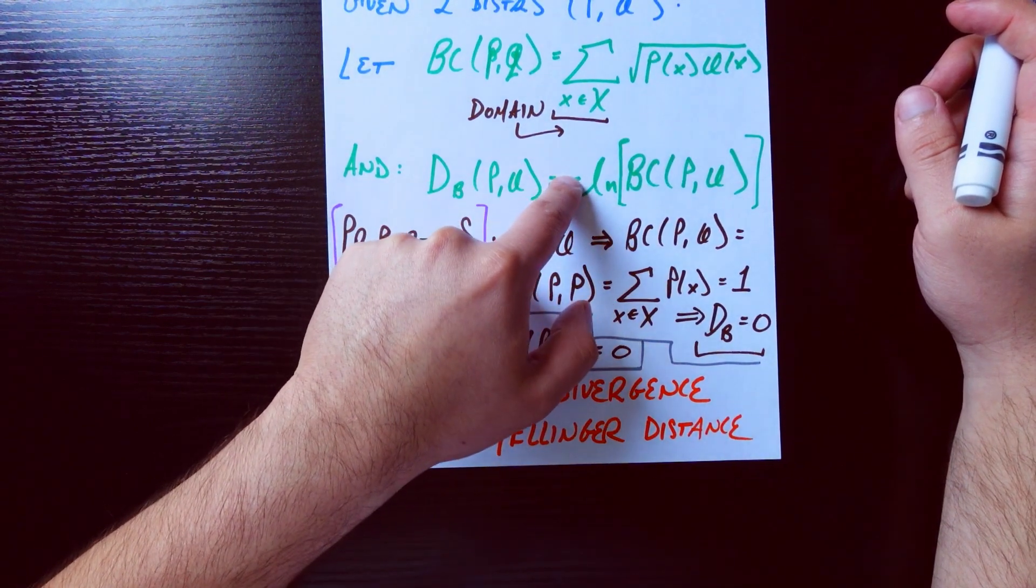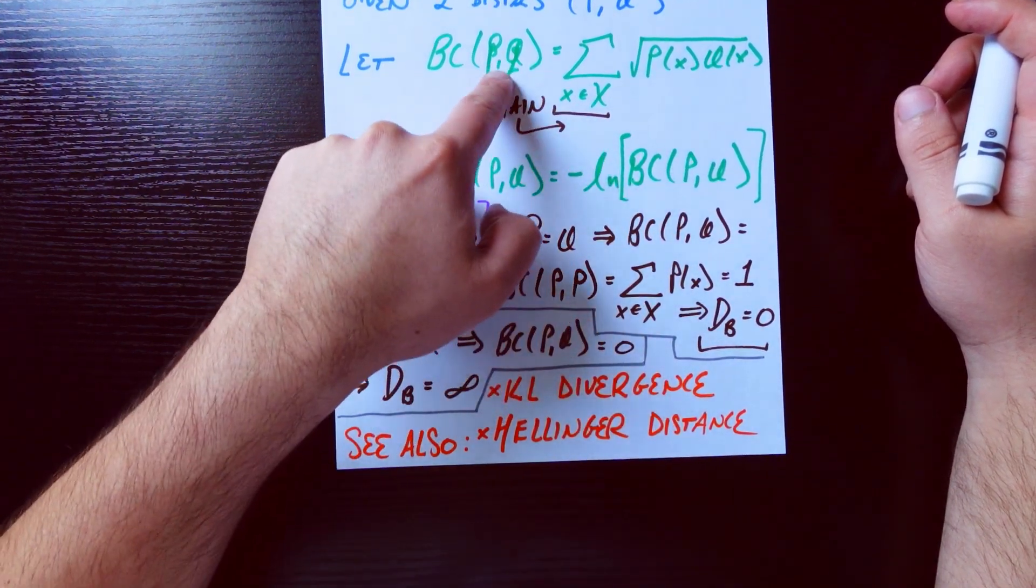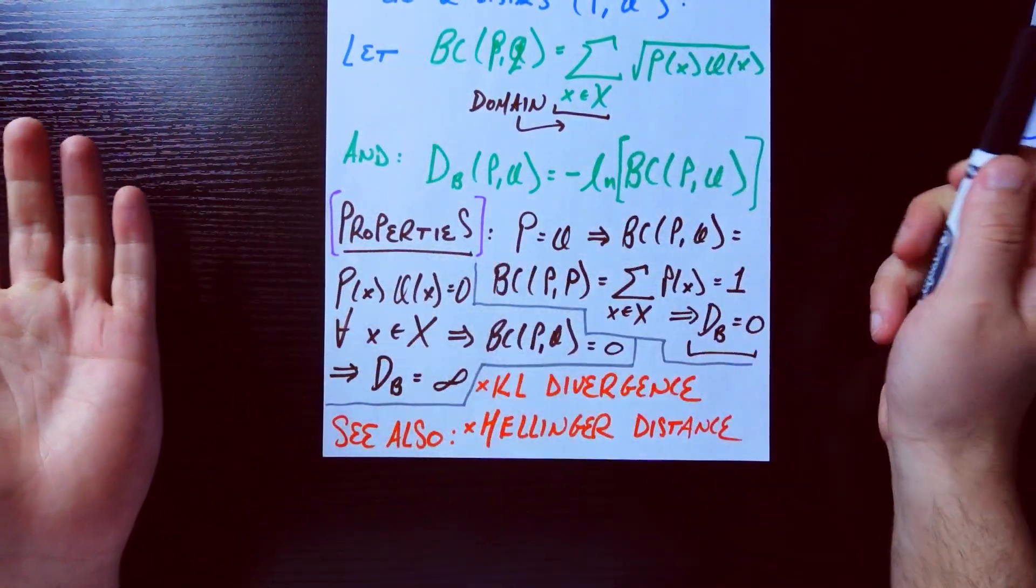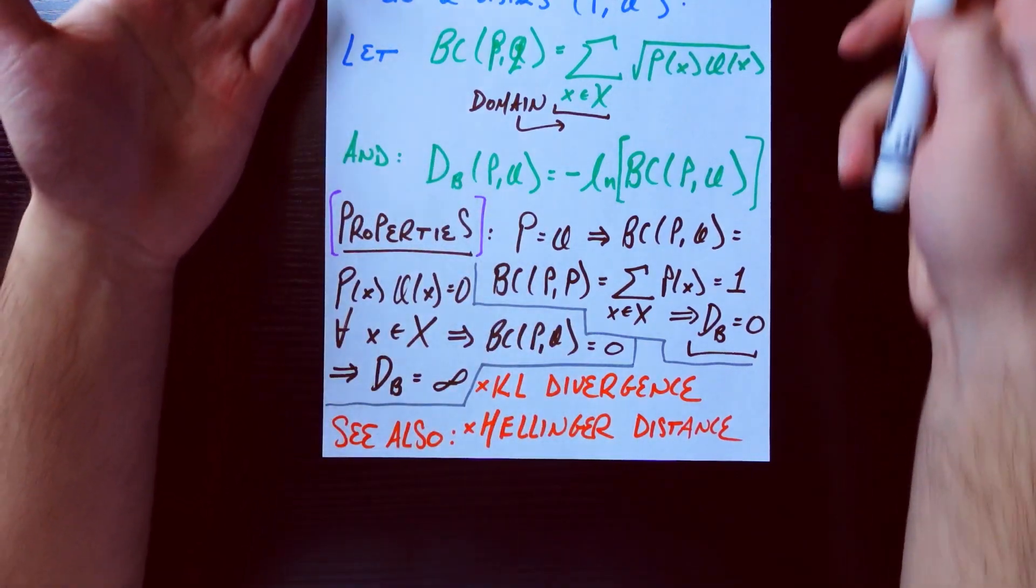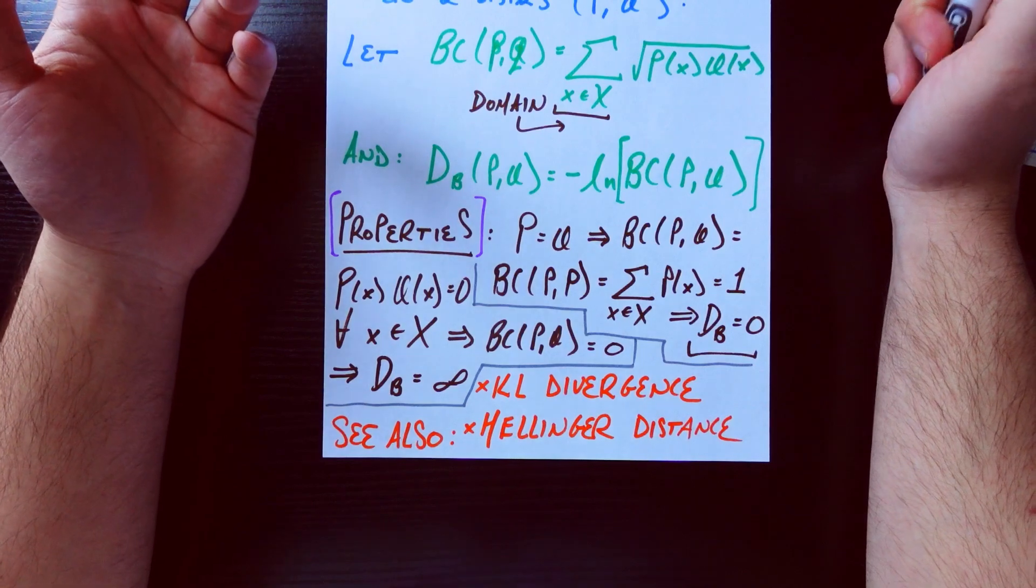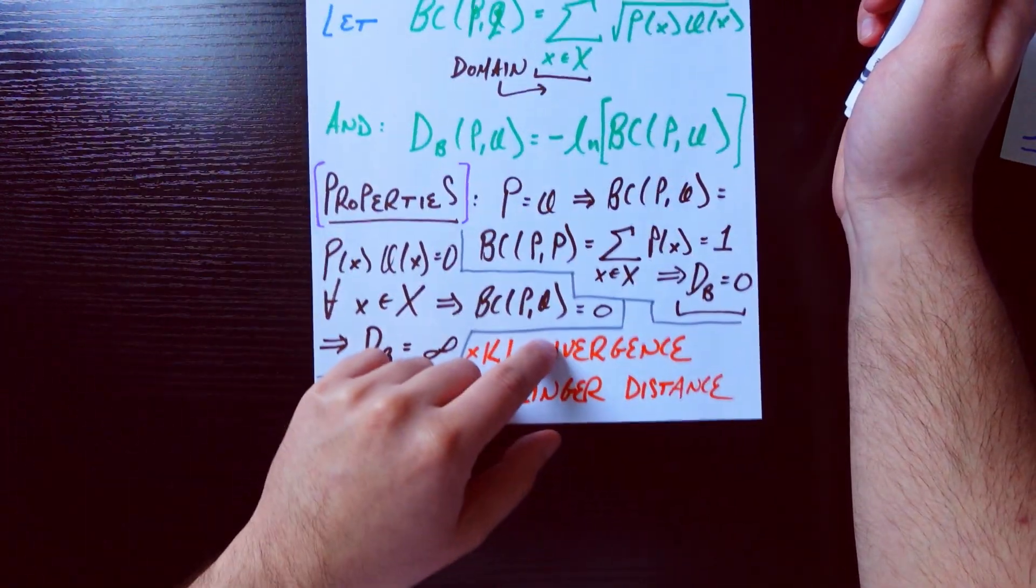And then the distance—I put this D_B here because we're talking about this distance here—this distance between these two distributions is the negative natural log of this quantity we just computed up here. So obviously this does not mean much because we just kind of threw a formula at you here. But what does this formula represent?